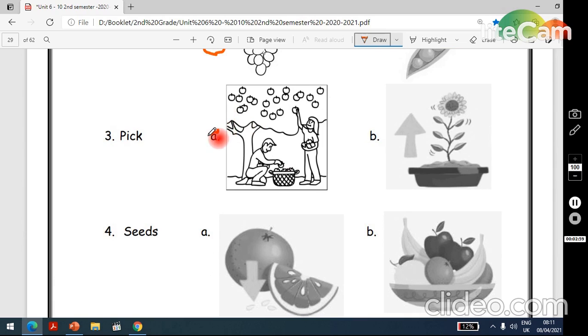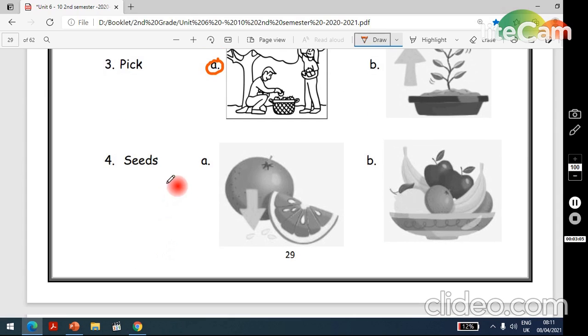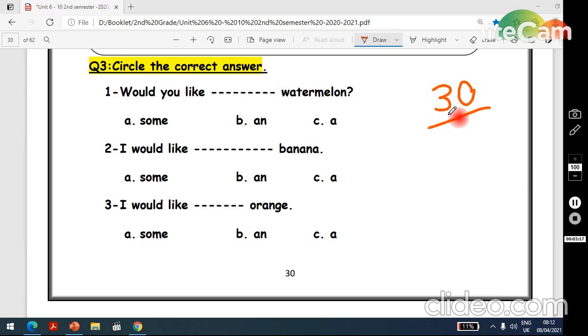B, grow. What about number 4? Seeds, A or B? Yes A. Here we have fruits in B.